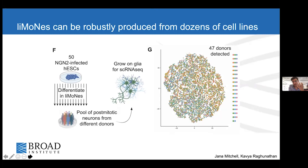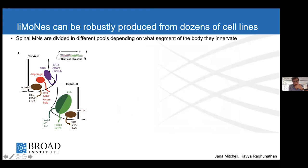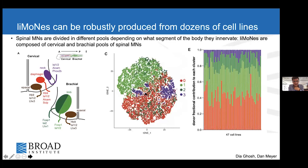From our UMAP projection of the 50 cell lines differentiated, we were able to detect 47 of them at the end of differentiation—a big success. Donors distributed pretty evenly throughout the graph, suggesting a robust system not skewed by cell origin. Importantly, we could identify four known subtypes of spinal cord motor neurons consistent with the patterning we applied, and all 47 donors could generate each of the four groups to a similar extent—confirming that this protocol is not only robust but highly reproducible across dozens of cell lines.